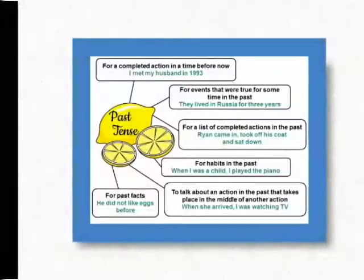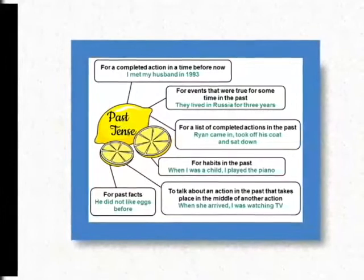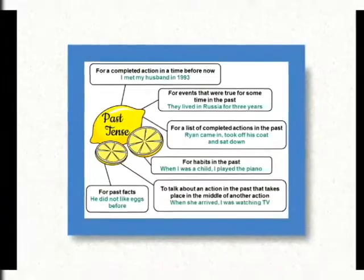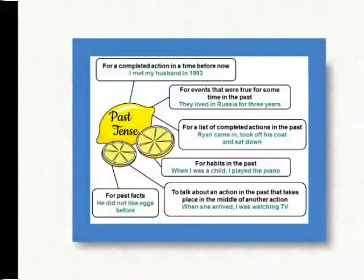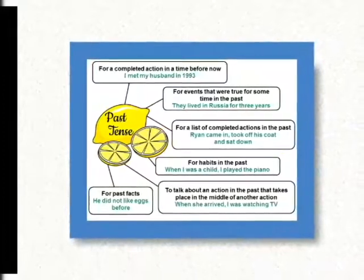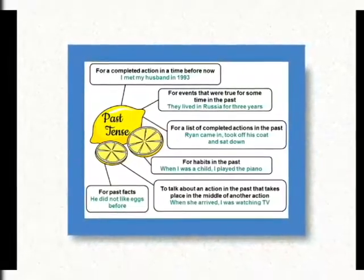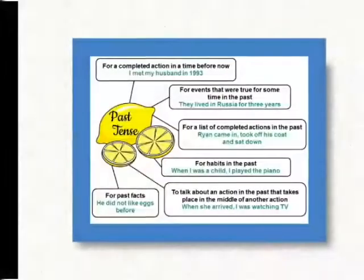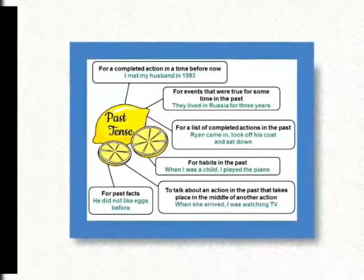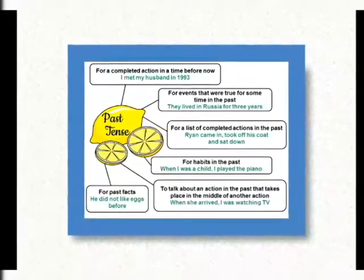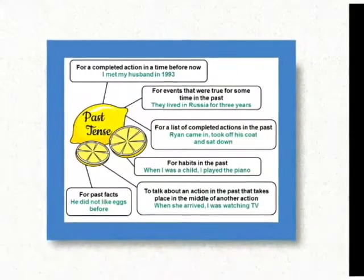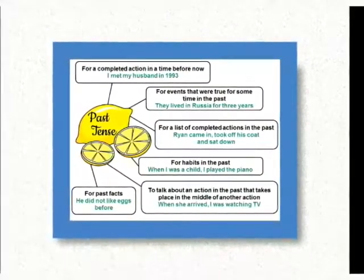Fourth, for habits in the past. We all have habits from the past, and if we are talking about those habits in the present, we use simple past tense — for example: 'When I was a child, I played the piano.' 'Played' is the second form of 'play.' Fifth, to talk about an action in the past that takes place in the middle of another action — 'When she arrived, I was watching TV.' You were watching TV and suddenly somebody arrived, so you say 'when she arrived' — 'arrived' is the second form of 'arrive.'